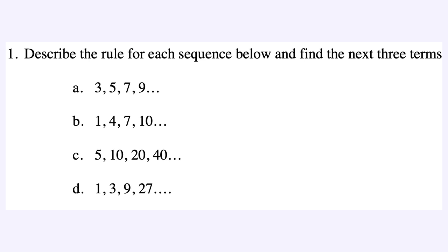Q1A: 3, 5, 7, 9 — we're adding 2 each time, so the next three terms are 11, 13, and 15. That is a linear sequence because we're adding. Q1B: 1, 4, 7, 10 — we're adding 3 each time: 10 plus 3 is 13, then 16, then 19. Also linear.